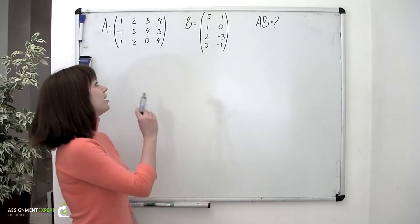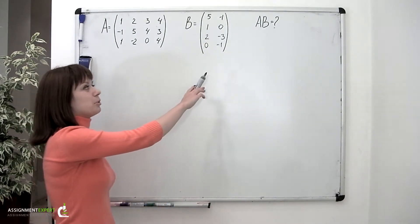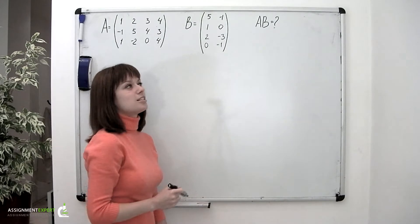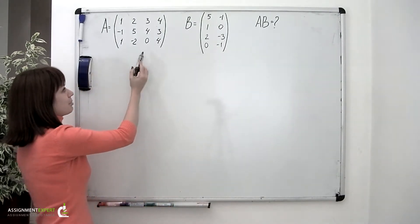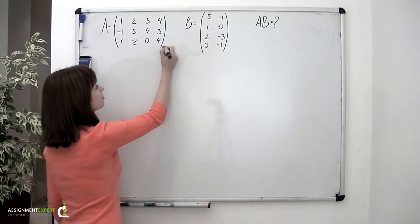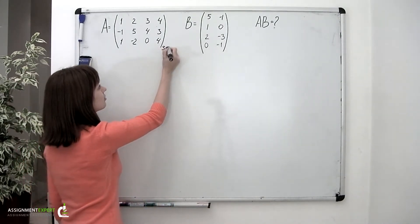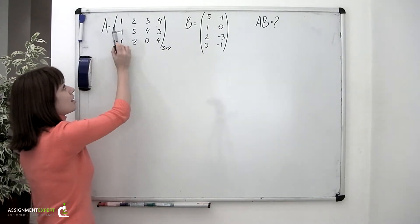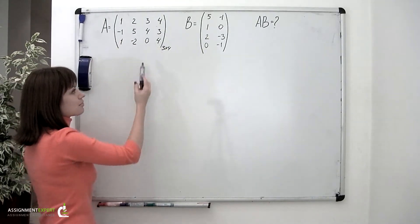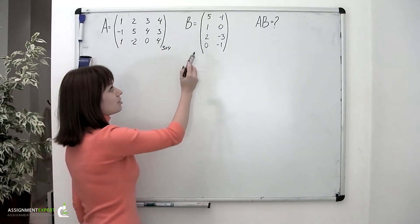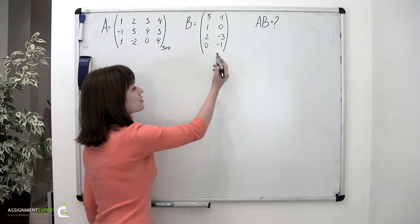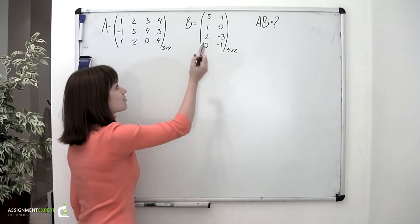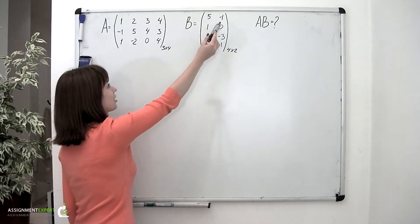We have two matrices, A and B, and we need to find their product. Matrix A is of the size 3 by 4, which means that it contains 3 rows and 4 columns, and matrix B is of the size 4 by 2, which means that it has 4 rows and 2 columns.